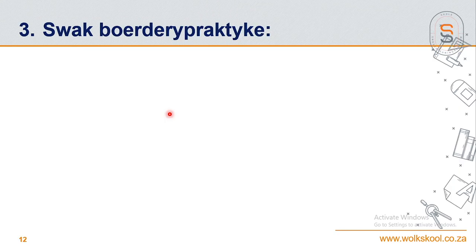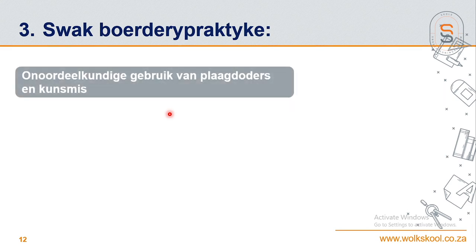Kom ons kyk nou na die derde probleem wat die beskikbaarheid van water kan beinvloed: swak boerdery praktyke. As ons kom by voedselsekerheid en by uitheemse plantegroei gaan jy elke keer sien swak boerdery praktyke duik op. Die eerste ding wat ons kan sê is onoordeelkundige gebruik van plaagdoders en kunsmis - maar gelukkig is vandag se kunsmis en plaagdoders baie meer spesifiek en dit is 'n duur produk, so boere gebruik minimum vir maksimum resultate.